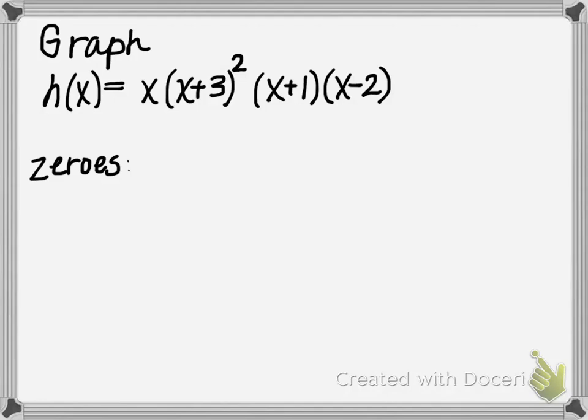So I'm going to go ahead and underline the factors. We have x here as a factor because it is multiplied by x plus 3 quantity squared. So x plus 3 is our second factor and then we have an x plus 1 as well as an x minus 2. So these are going to be our factors.